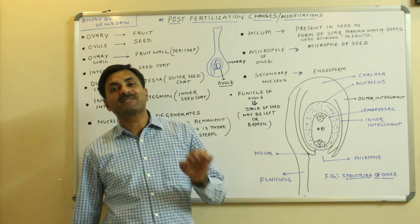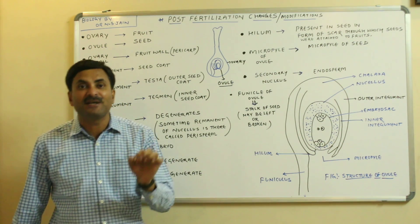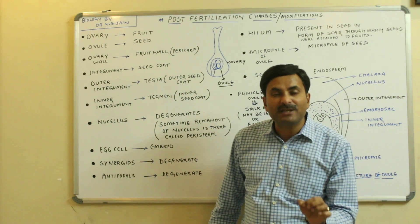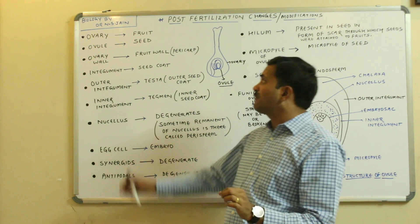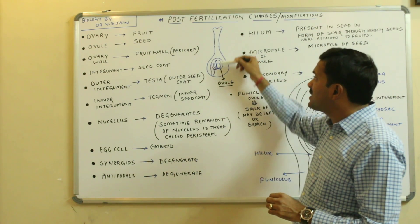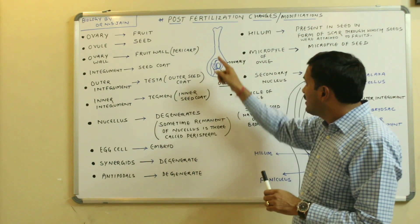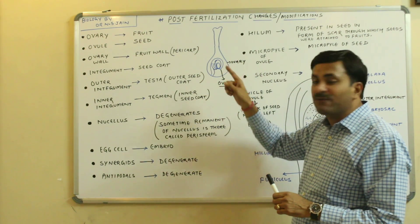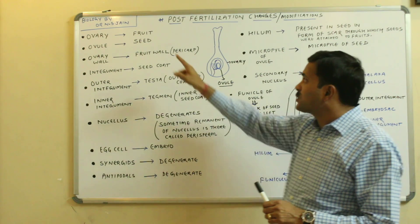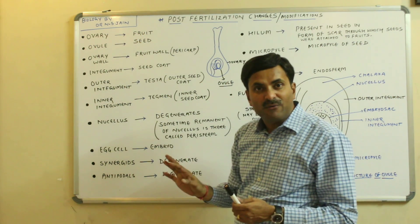Today we will be discussing post-fertilization changes or modifications which occur in the angiospermic plant. First, what happens to the ovary? As we know, the carpel consists of stigma, style, and ovary. After fertilization, the ovary is converted into the fruit — this is the first post-fertilization change.